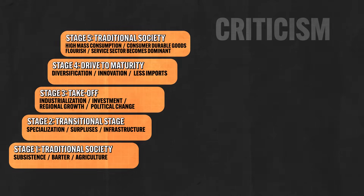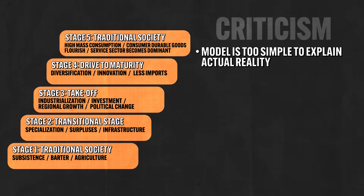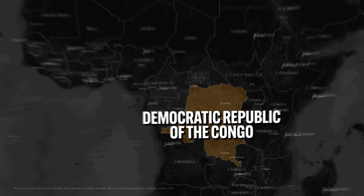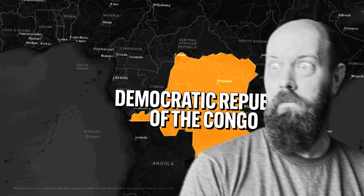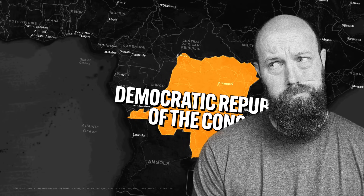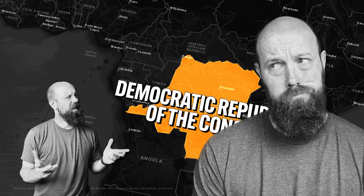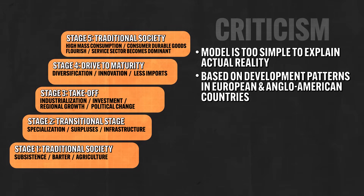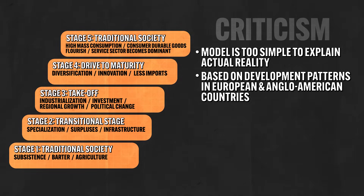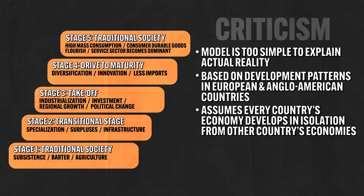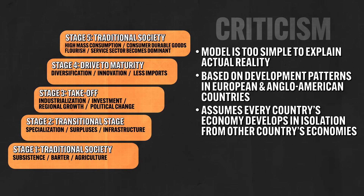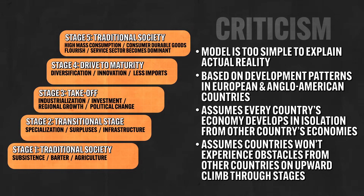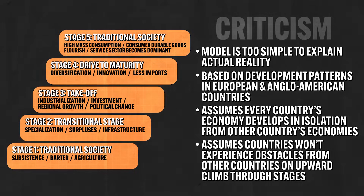Even the least developed and poorest countries will eventually become wealthy and highly developed in the long run — so that's nice and simple. But there have been significant criticisms of this theory. The main criticism is that this model is too simple to explain actual reality. Like if Rostow were talking to folks living in the DRC, he'd look around at the shanty towns, the disamenity zones, and the polluted water, and he'd say, 'Give it a couple hundred years and you'll be binging Netflix and ordering AirPods off Amazon.' Additionally, Rostow developed his theory based on development patterns in European and Anglo-American countries, which doesn't necessarily apply to countries with different cultures and histories. It assumes economies develop in isolation, and that countries will experience no obstacles from other countries on their upward climb through the stages — which is not realistic.